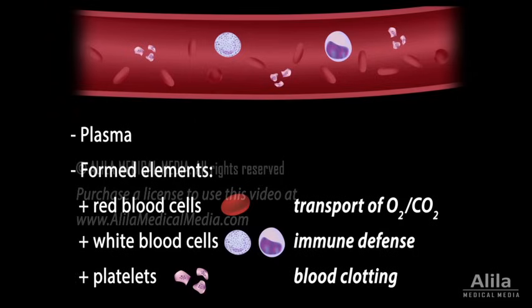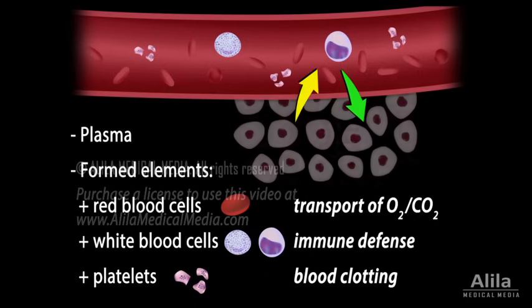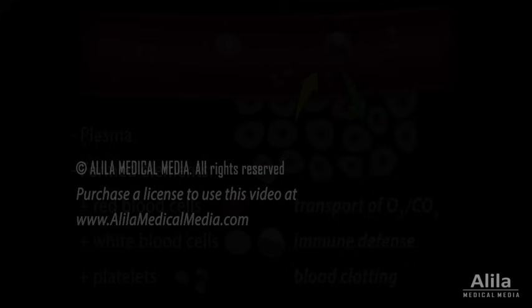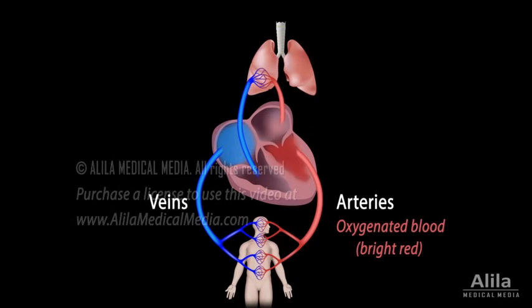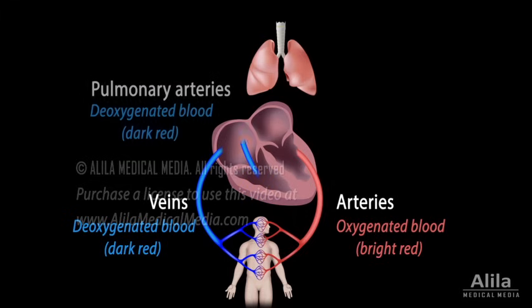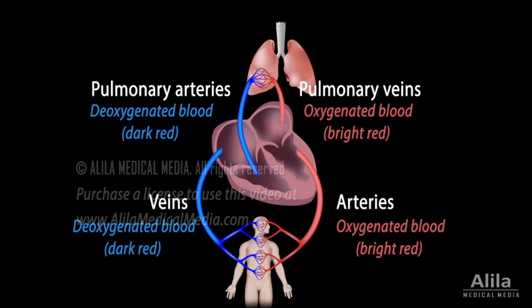The blood circulatory system is a closed loop, meaning the blood itself never leaves the vessels. Instead, substances diffuse through the walls of blood vessels to move to and from the surrounding tissues. Vessels that move blood away from the heart are called arteries, while those that bring blood back to the heart are veins. Arteries usually carry oxygenated blood, while veins carry deoxygenated blood. For pulmonary arteries and veins, however, the reverse is true.